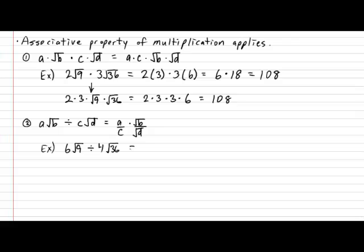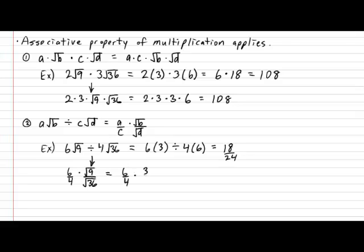Straightforward: (6 × √9) ÷ (4 × √36) = (6 × 3) ÷ (4 × 6) = 18 ÷ 24. Using the associative property: (6 ÷ 4) × (√9 ÷ √36) = (6/4) × (3/6) = 18/24. Both give the same answer. And that's it — that's all there is to the properties of radicals.